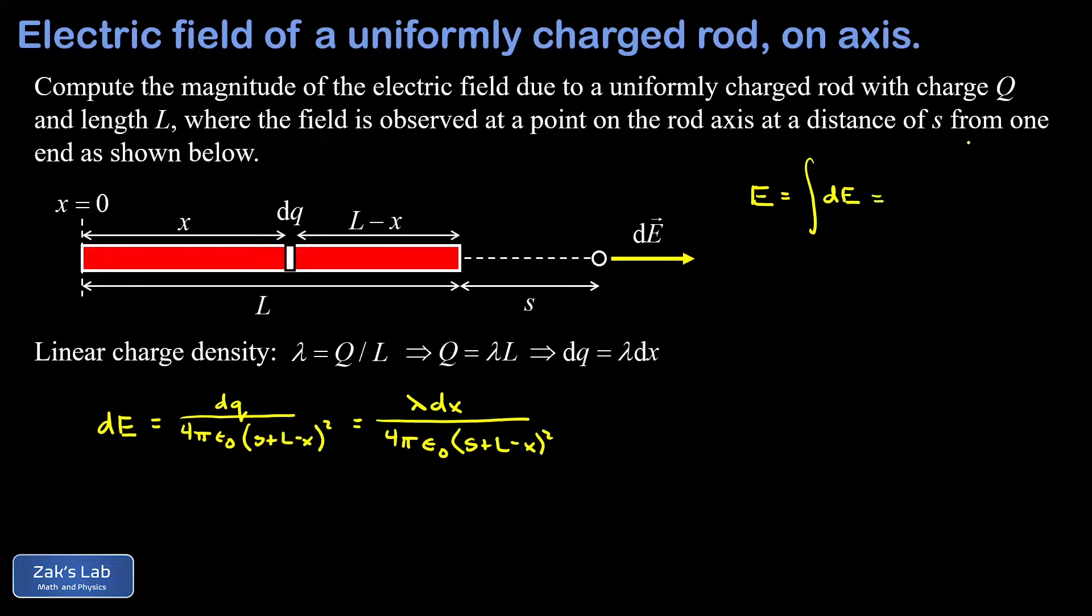Now we just have to plug in our expression for dE and we see that our dE has been phrased entirely in terms of that single variable x. So our limits of integration are going to go from the starting value of x to the finishing value as we cover the entire rod chopping it into little dqs. So this starts at x equals zero and ends at x equals L.